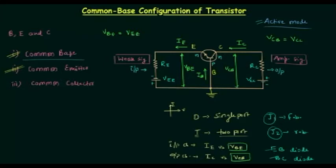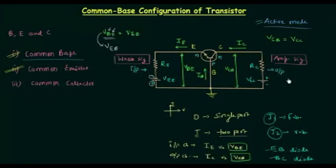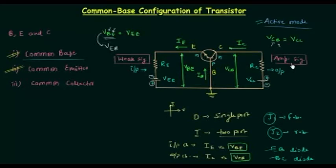Now there is one very important thing I want to explain. You cannot write VBE as VEB. If you follow proper nomenclature, you cannot write VBE as VEB because B is at higher potential and E is at lower potential, so B will come first then E. In the same way, the collector is at higher potential and base is at lower potential, so in the representation C will come first and later B — giving us VCB. So these are the important representations for input voltage and output voltage.